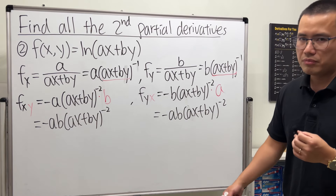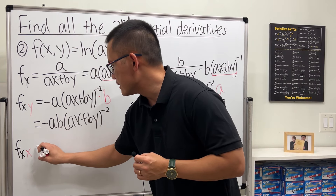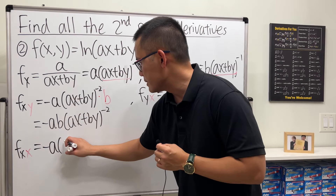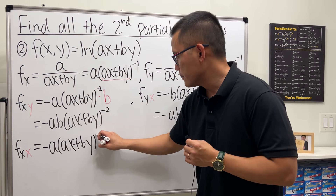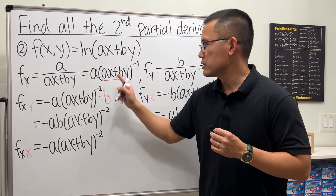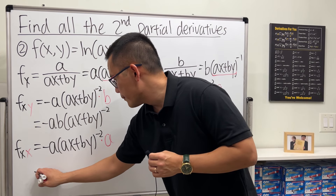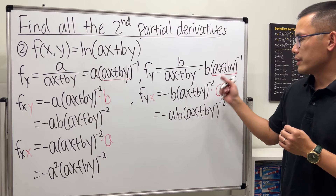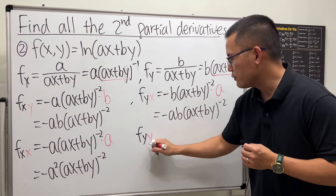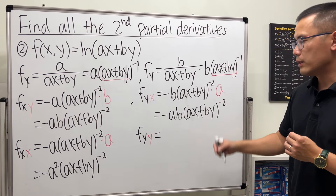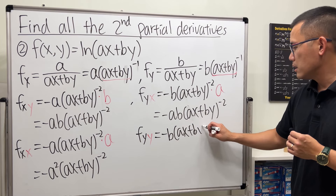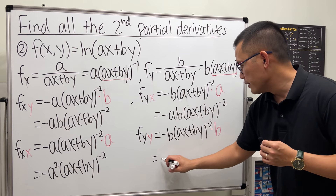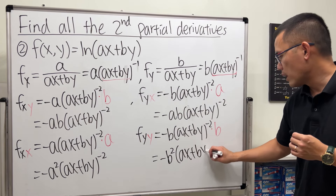Now let's do fxx. Looking at fx and differentiating with respect to x: put the power to the front, so we get negative a times minus one to the power, then multiply by the derivative inside with respect to x, giving another factor of a. So fxx equals negative a squared times (ax + by) to the negative two. For fyy, differentiate fy with respect to y: put the power to the front, minus one, and multiply by the derivative inside with respect to y, giving b. So fyy equals negative b squared times (ax + by) to the negative two.